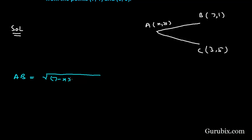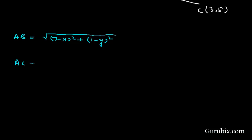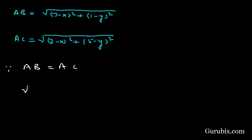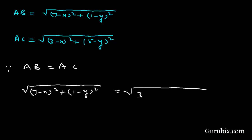The distance AB will be the square root of (7 - x)² + (1 - y)², and AC will be the square root of (3 - x)² + (5 - y)². Since AB equals AC, we set square root of (7 - x)² + (1 - y)² equal to square root of (3 - x)² + (5 - y)².